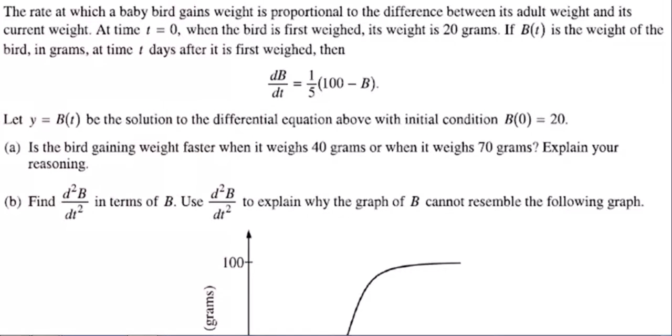So let's look at this one with a context. The rate at which a baby bird gains weight is proportional to the difference between its adult weight and its current weight. At time equals zero when the bird is first weighed, its weight is 20 grams. So what are we talking about right there? We're talking about an initial condition probably going to come into play somewhere.